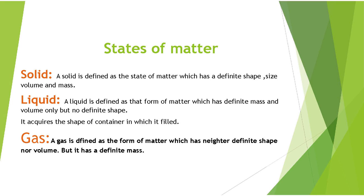The second state is liquid. In the liquid state there is a definite mass and volume but not a definite shape. Liquid acquires the shape of the container in which it is filled. For example, if you keep water in a glass, it takes the shape of the glass; if you keep it in another container, it acquires the shape of that container.